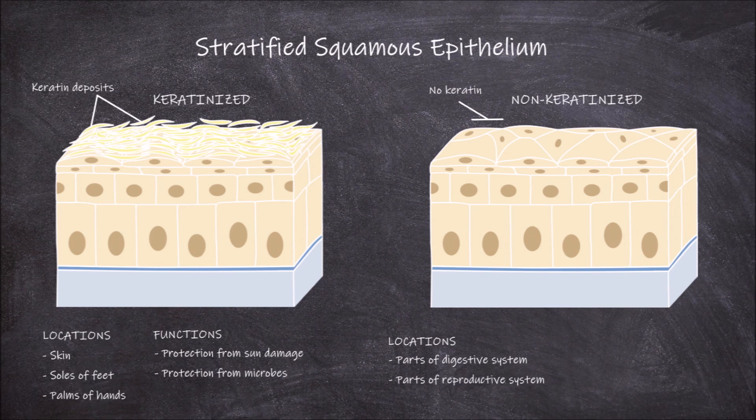It is also found in parts of the female reproductive system. It functions in protection from physical stresses, and also helps protect against microbes and other foreign materials getting into the tissues underneath the epithelium.